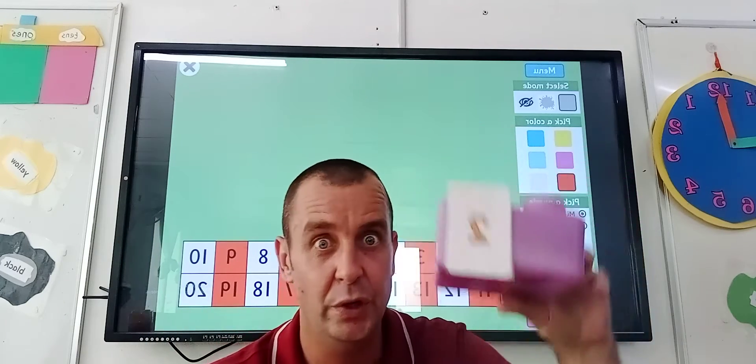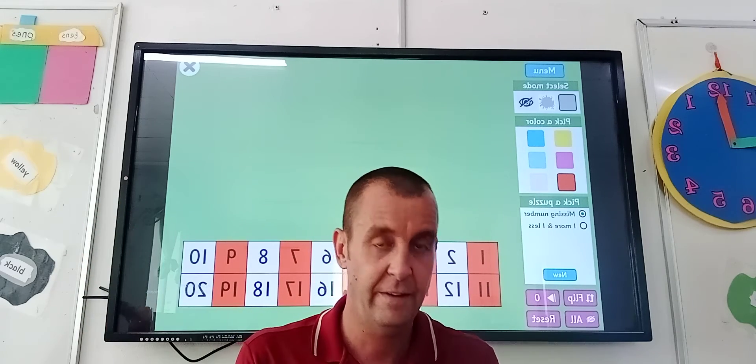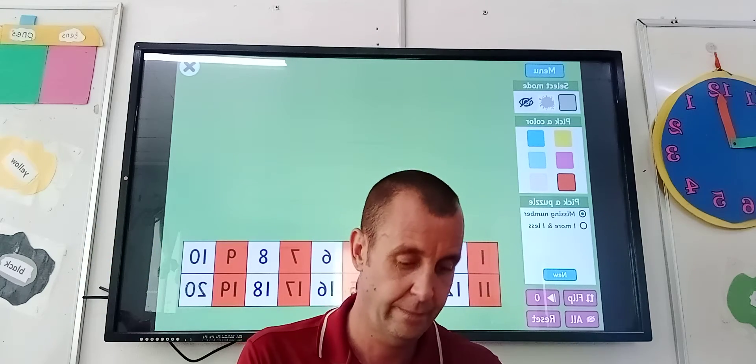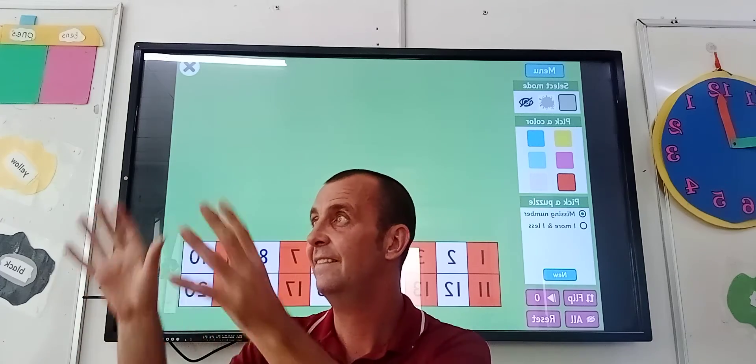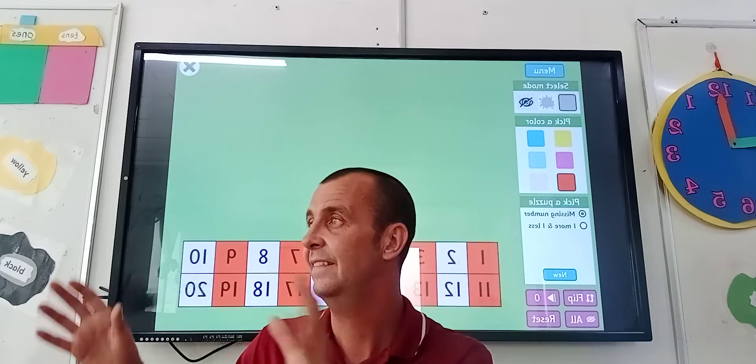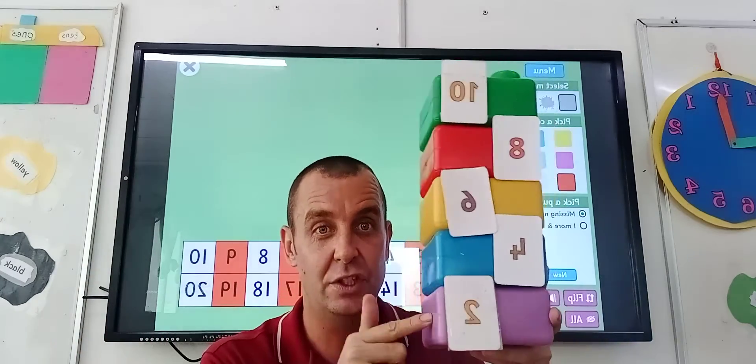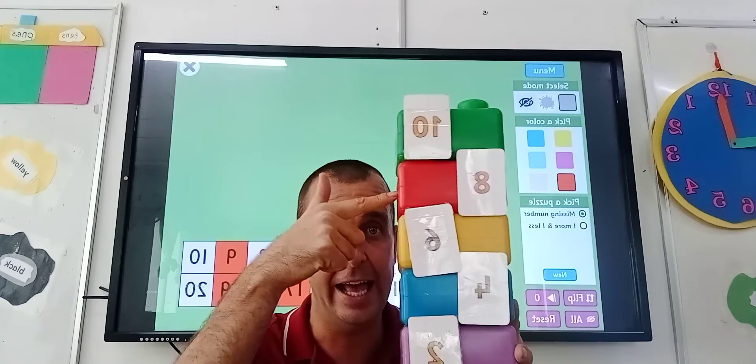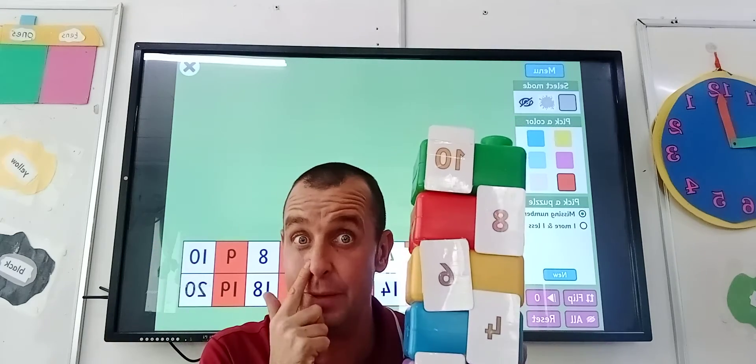So I've got 2. What's the next one? 4. And the next one, please, Scooby. 6. 8. 10. So let's just count what we've got so far. 2, 4, 6, 8, 10. 2, 4, 6, 8, 10. All even numbers. Remember that one, guys.